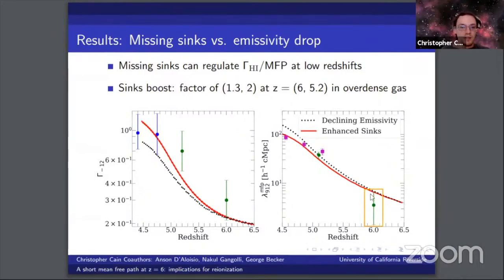To put some numbers to this, to get good agreement with the mean free path, we had to increase the opacity in overdense gas in our model by a factor of 1.3 and 2 at redshift 6 and 5.2 respectively.